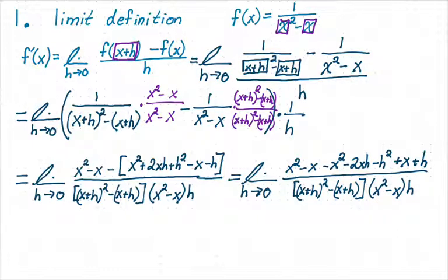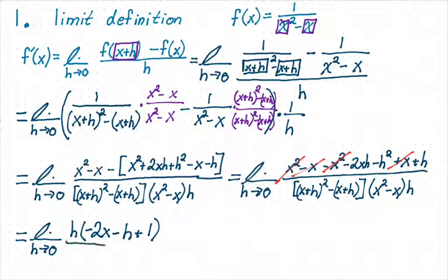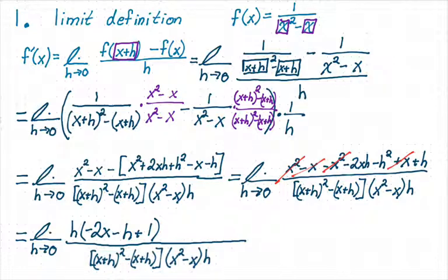All right. So now things will cancel. In the numerator, this x squared will cancel with this negative x squared. And this negative x will cancel with this x. And now everything else in the numerator has an h in it. So when I'm rewriting this, I'm going to factor an h out.